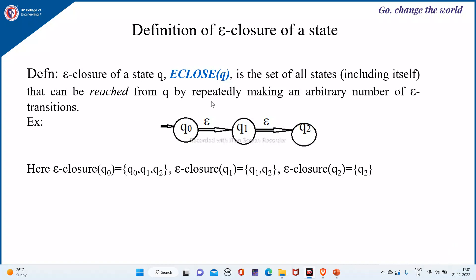Epsilon closure of a state, written as E-closure or epsilon closure, is a set of all states including that state itself. These are the states which can be reached from Q by repeatedly making an arbitrary number of epsilon transitions — so only on epsilon transitions, those states which can be reached from Q will be included in the epsilon closure of Q.